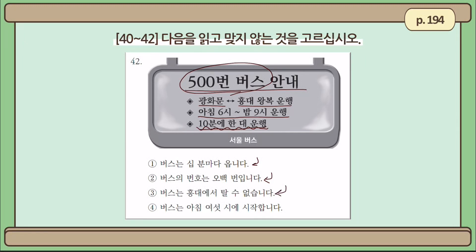Number 3: 버스는 홍대에서 탈 수 없습니다 — you cannot take the bus at the 홍대 bus stop. Well, that's false — the bus goes to 홍대, as shown here. Number 4: 버스는 아침 6시에 시작합니다 — the first bus departs at 6 a.m. Yes, that's correct. So the only sentence that does not match the text is number 3.